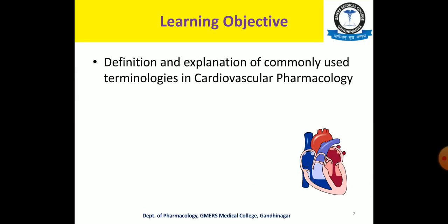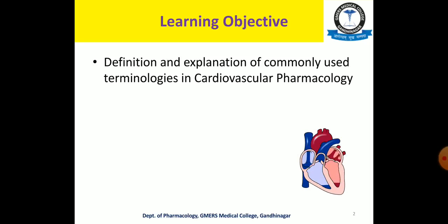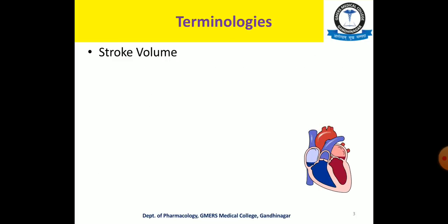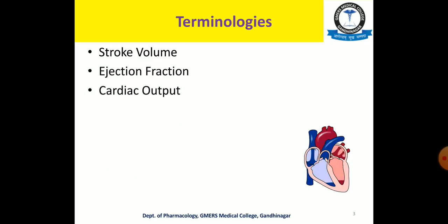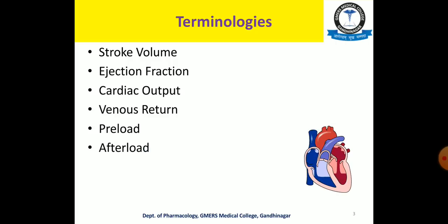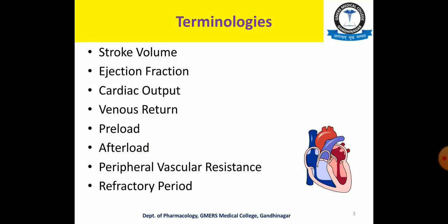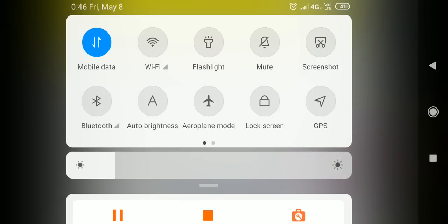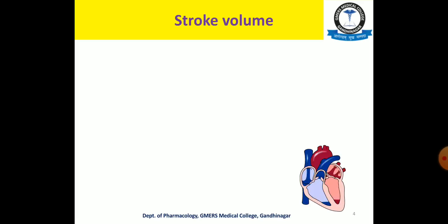The learning objective is the definition and explanation — more importantly, the explanation — of the commonly used terminologies in cardiovascular pharmacology. These terminologies are: stroke volume, ejection fraction, cardiac output, venous return, preload, afterload, peripheral vascular resistance, and refractory period.